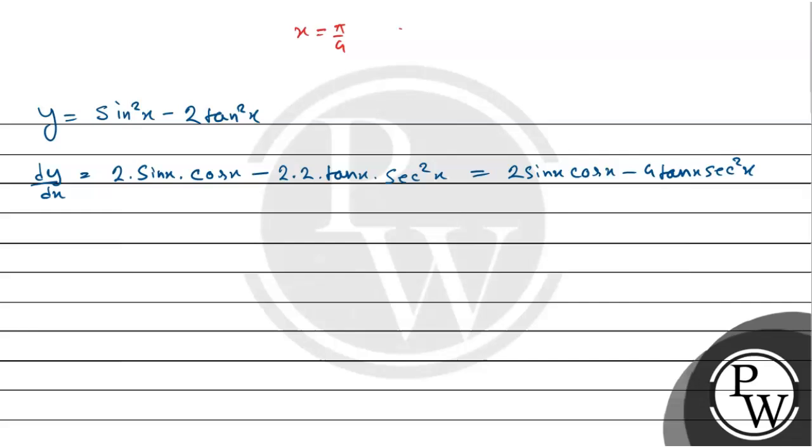This is equals to, 2 into sin π/4 into cos π/4 minus 4 into tan π/4 into sec square π/4.